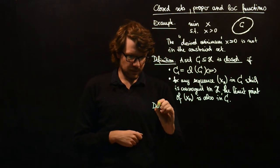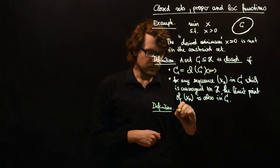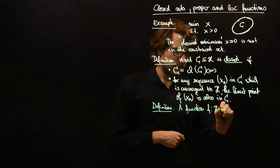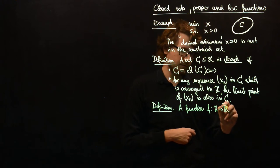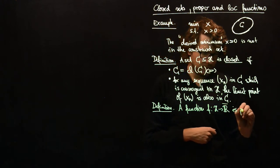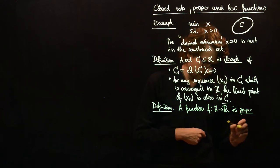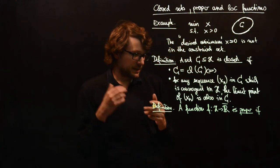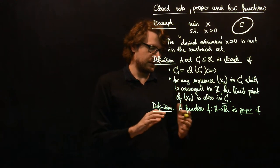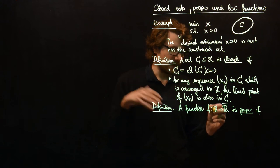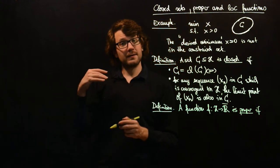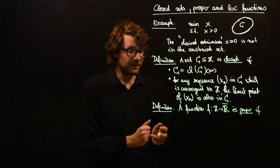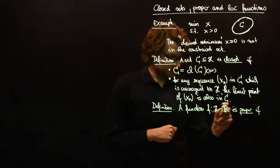Now let's talk about proper functions. This will be a bit shorter. The function f with values in the extended real line is proper if there exists a value, a point x such that f of x is not plus infinity, and there is no point x such that the function takes the value minus infinity there.